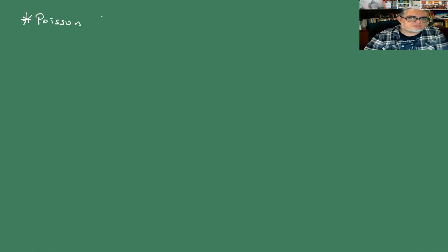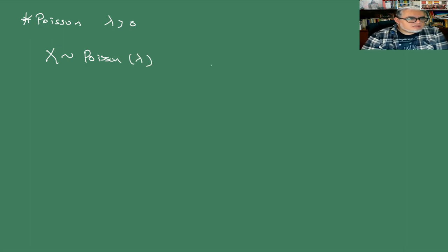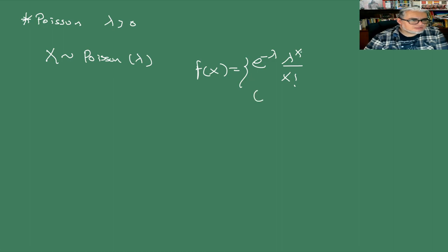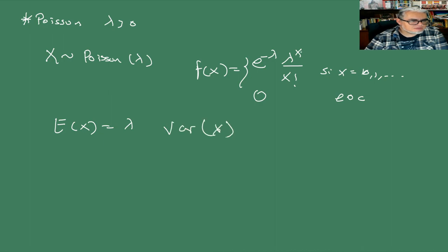Distribución de Poisson con parámetro lambda mayor que 0. Indicamos que X se distribuye como un Poisson de parámetro lambda. La función de densidad es e a la menos lambda, lambda^X sobre X factorial, para X en el espacio muestral, y 0 en cualquier otro caso. La esperanza es lambda y la varianza también es lambda. Esta también tiene una pancita alta y luego se apachurra.